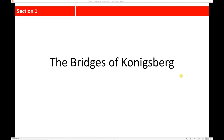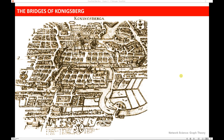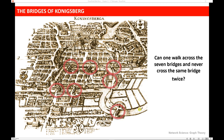The origins of graph theory can be traced back to 1735 in Prussia and what is called the Bridges of Königsberg problem. To give you the cultural context of the problem, here is a map of the River Pregel in Prussia. This is an area now known as Kaliningrad in Russia. Over the river, there were seven different bridges, and it became a very common question for the locals to ask: is there a way that we can walk across all seven bridges and never cross the same bridge twice?